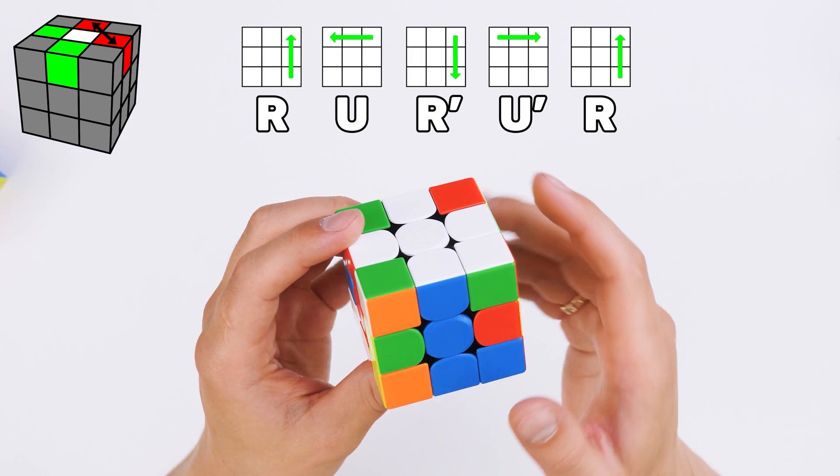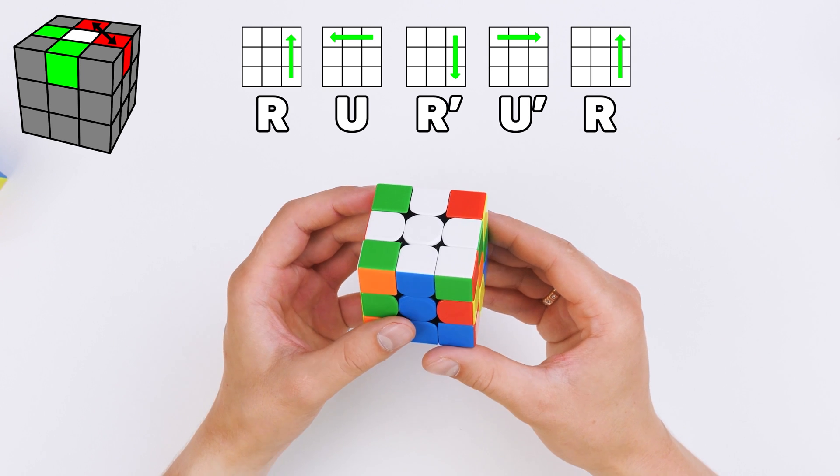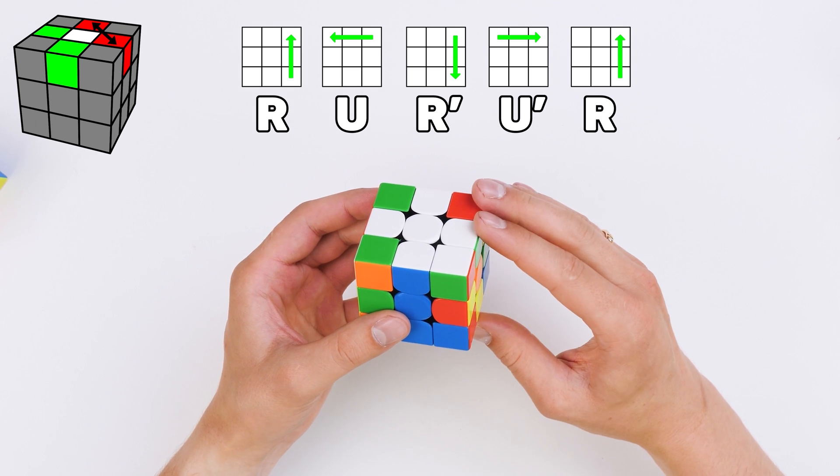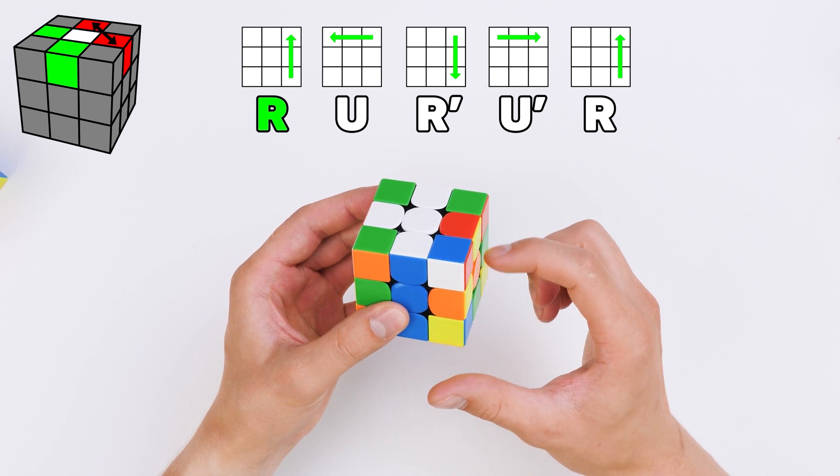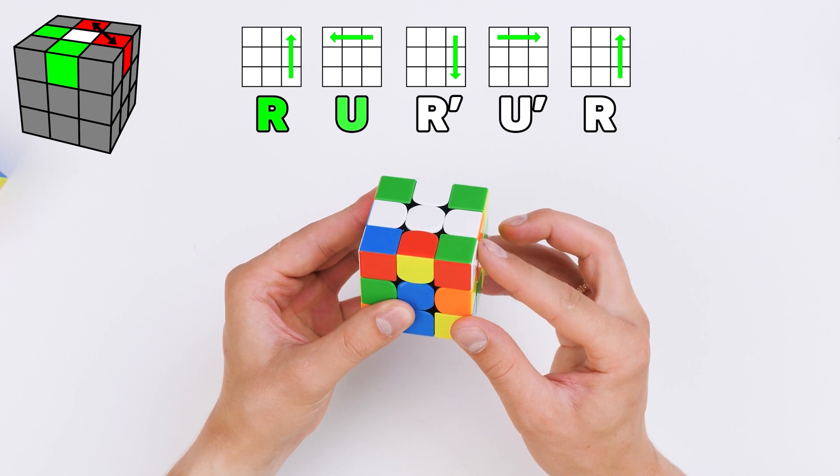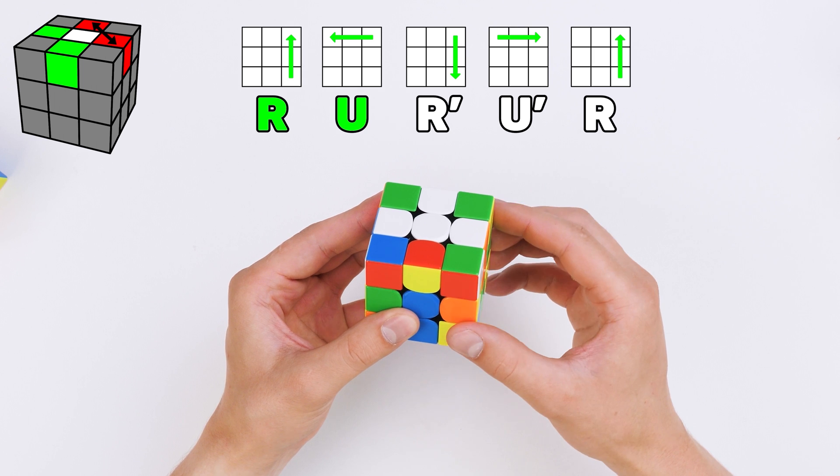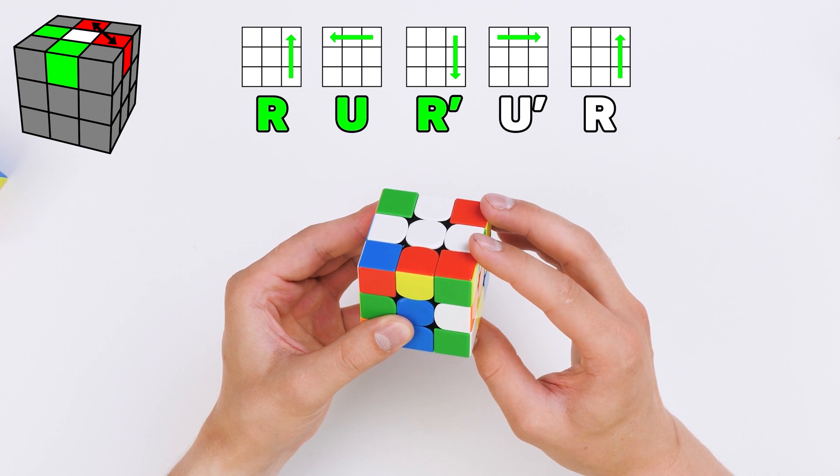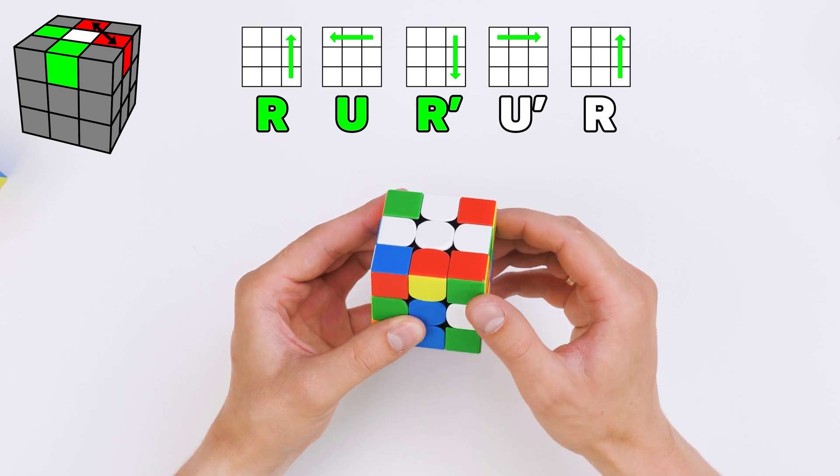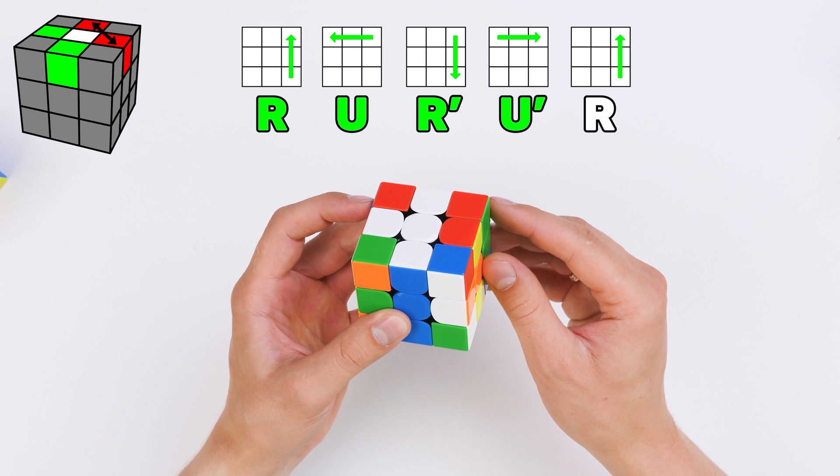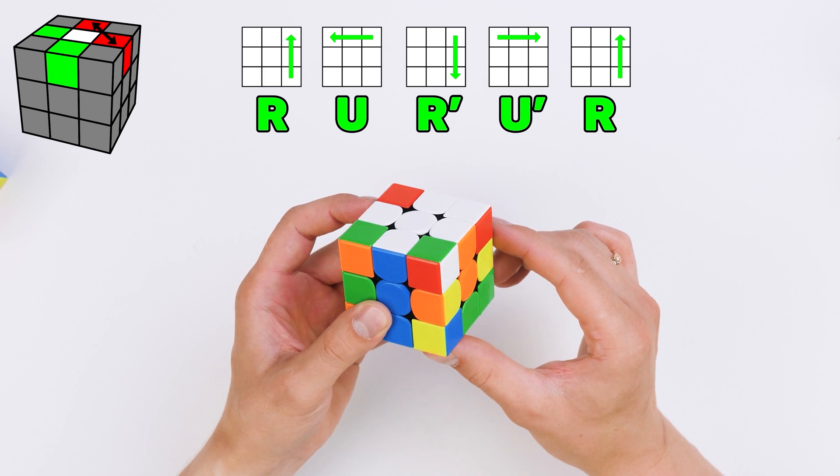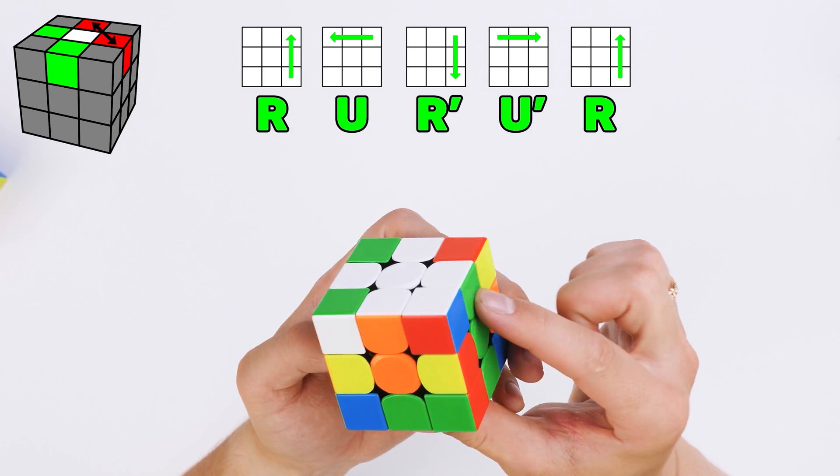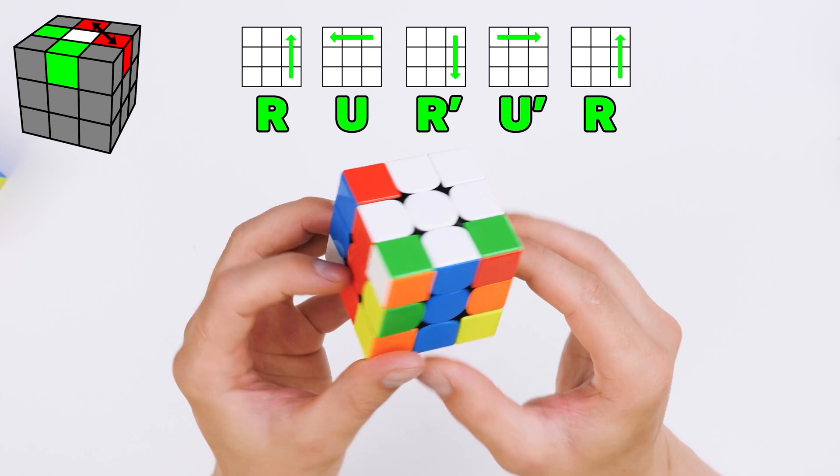Keep the cube sold side to yourself and make the following moves. The right face clockwise, the top clockwise, right counterclockwise, then top counterclockwise, and the right clockwise. If you have done everything correctly, all edges will be in their place.